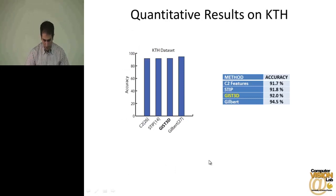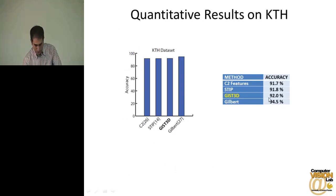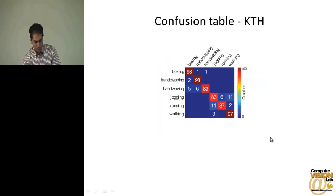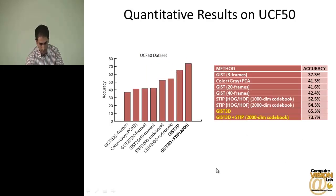On the KTH dataset, our descriptor achieved 92% average multi-class classification accuracy, which is slightly better than STIP and slightly lower than the state of the art. Looking at the confusion table, we have some confusion around running, jogging, and walking.